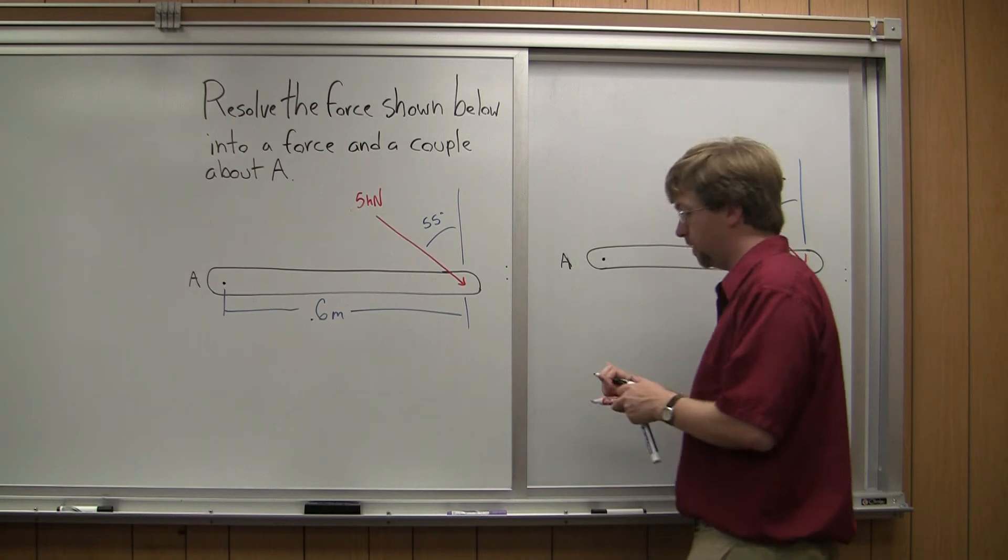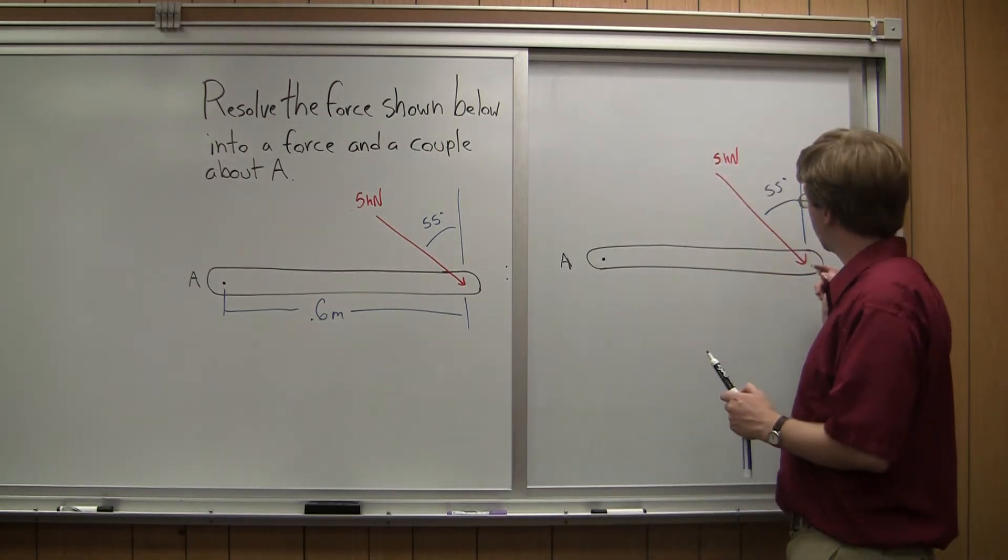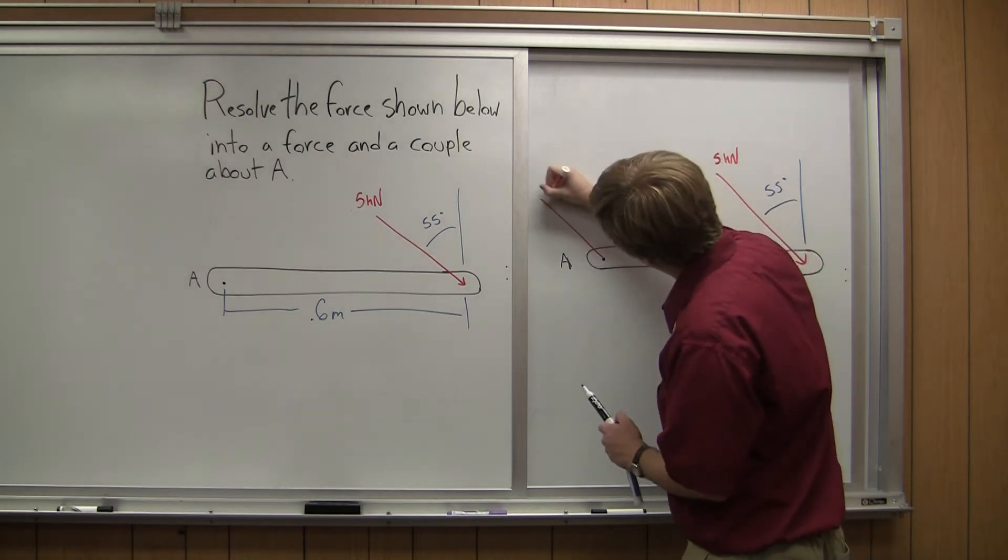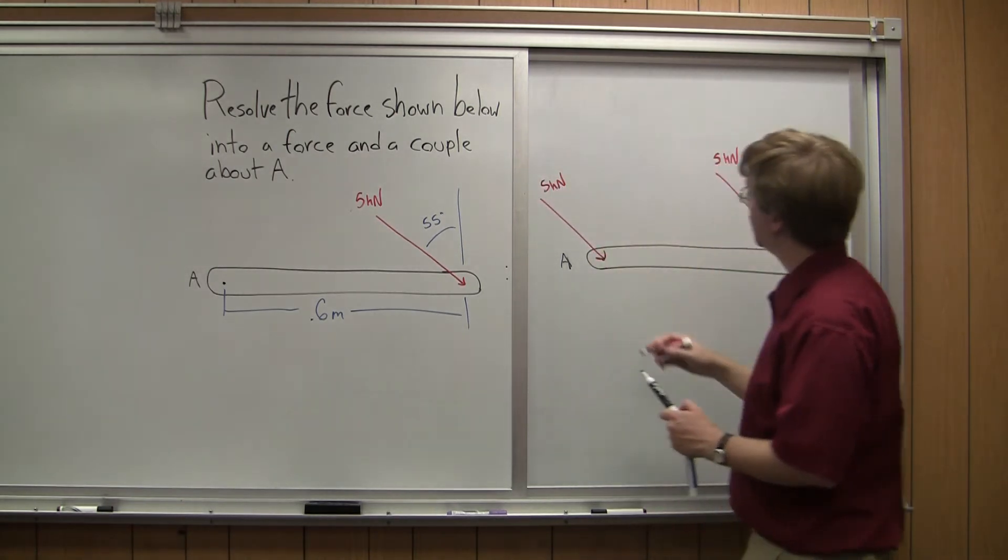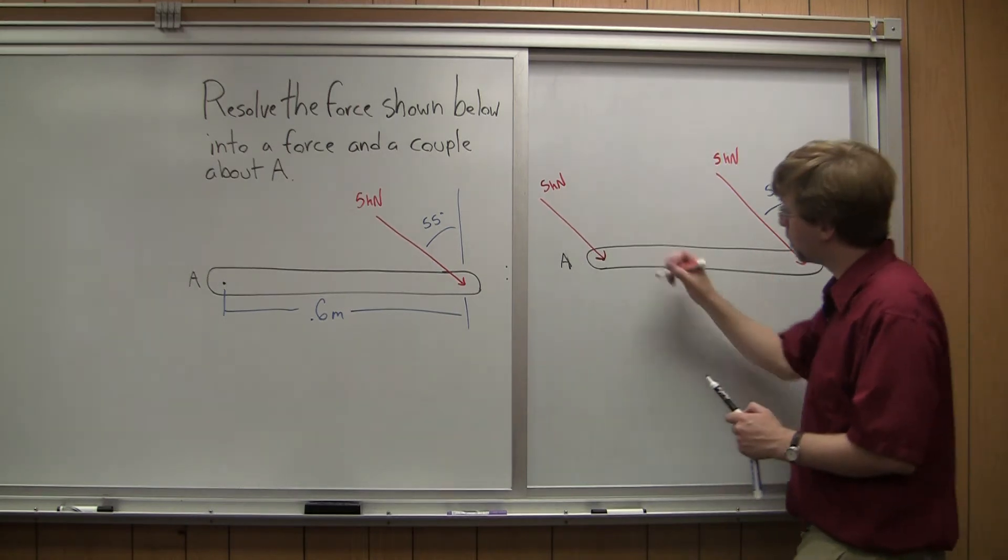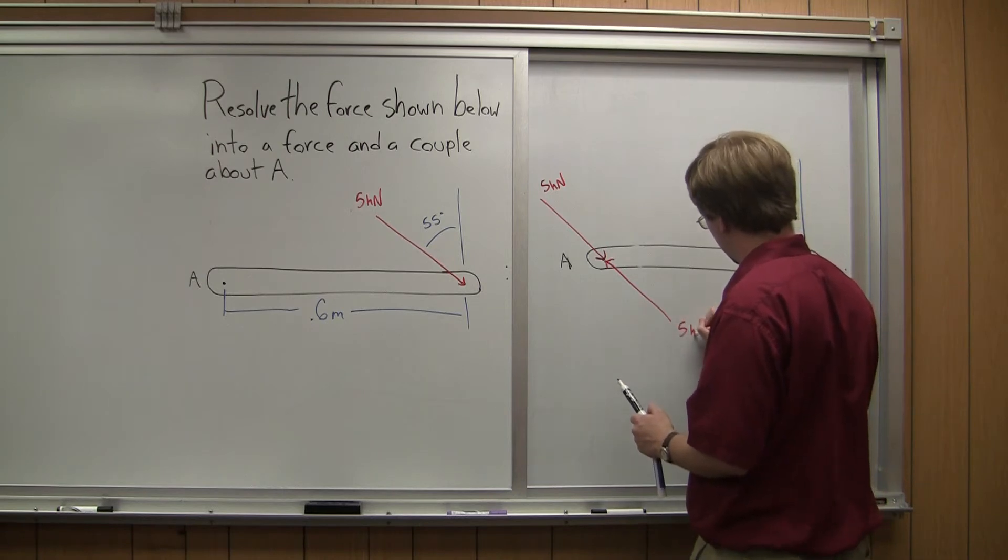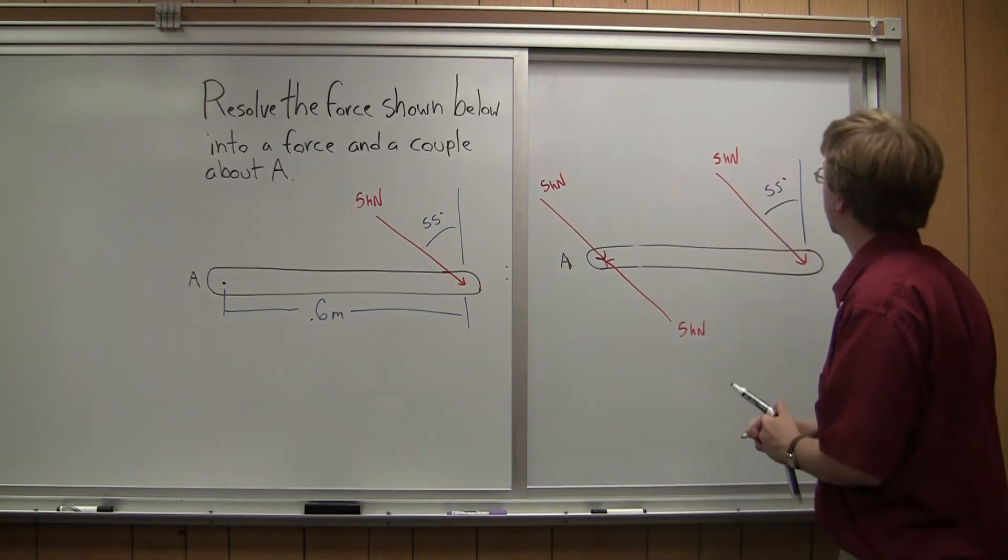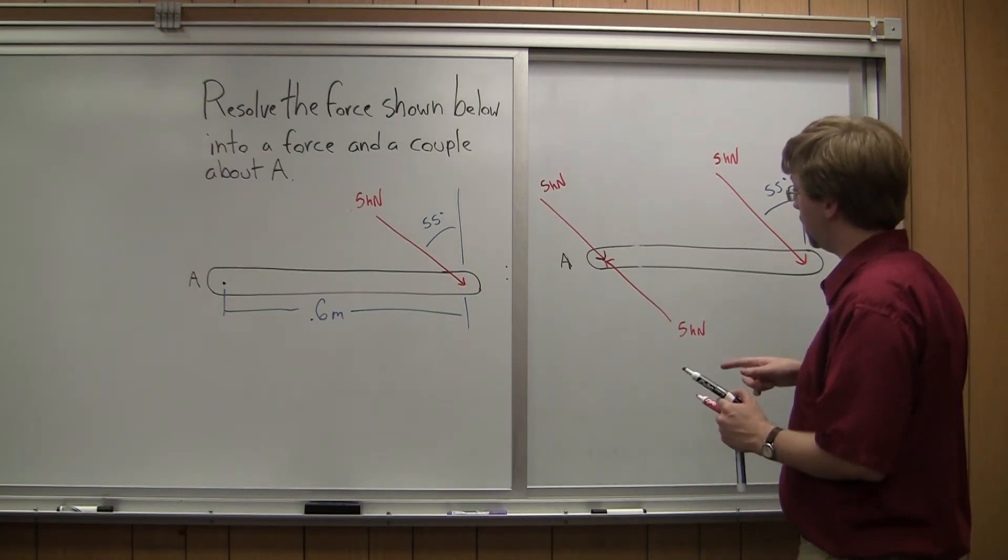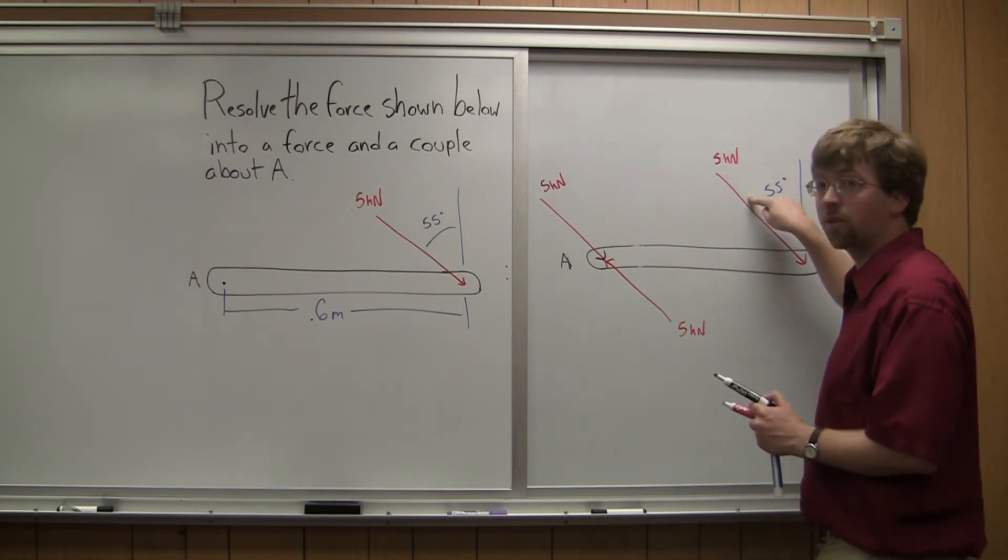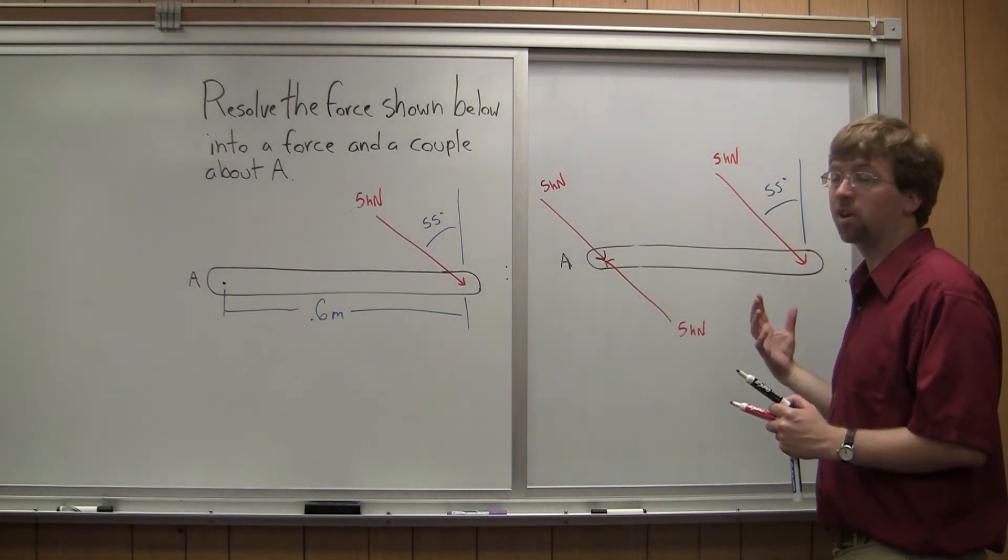So about point A, the first thing I'm going to do to visualize this is draw in my two equal and opposite forces. I draw in a force that is the same magnitude and direction as my original force, and I draw one that is exactly opposite. So now I've got two of these forces - this original force here and this one that is equal and opposite form a couple.